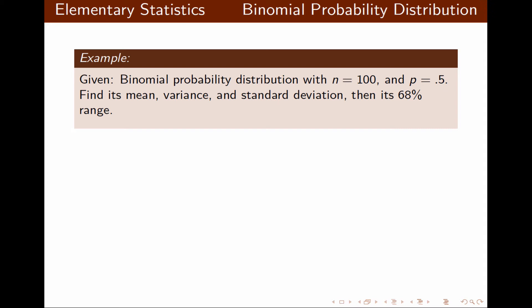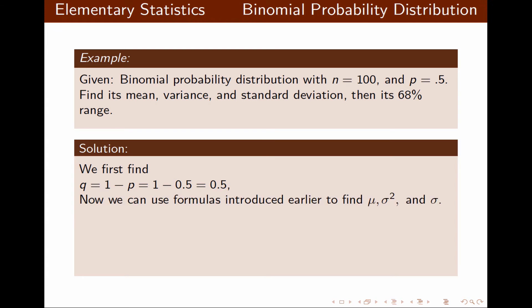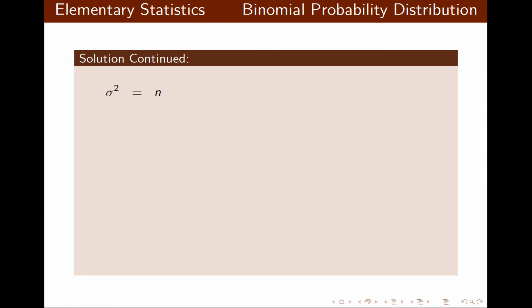In this example, we have a binomial probability distribution with n equal to 100 and P equal to 0.5. We want to find mean, variance, standard deviation, and then the 68% range. We find Q first, then apply the formulas. Mean is n times P, so the mean is 50. Variance is n times P times Q, so sigma squared equals 25. Standard deviation is the square root of the variance, which is 5.